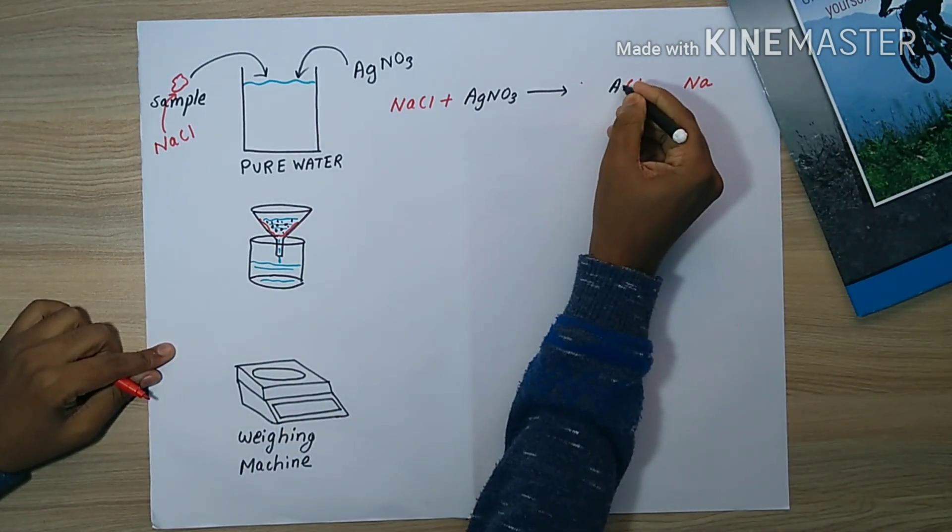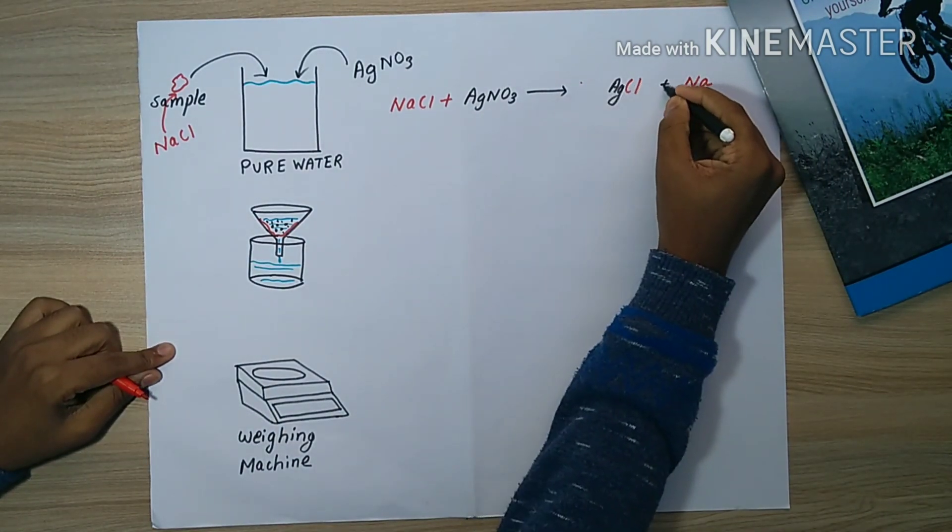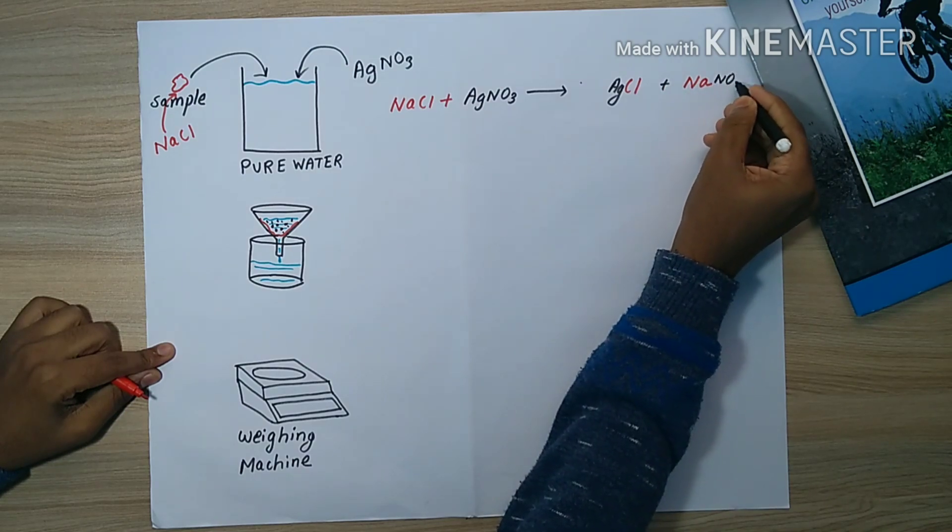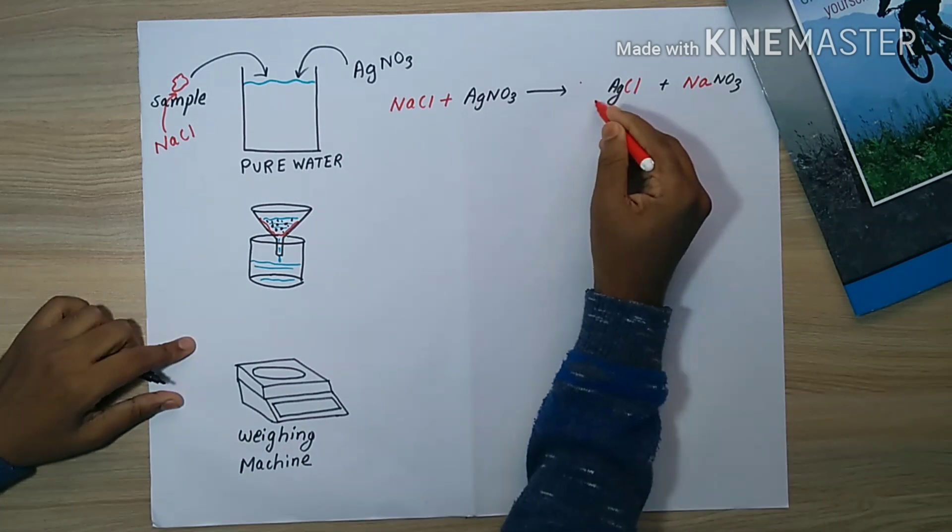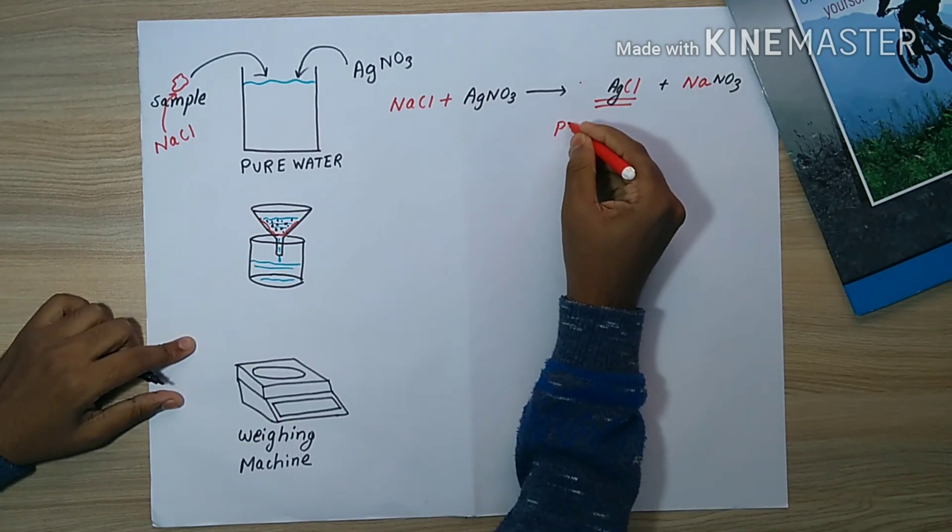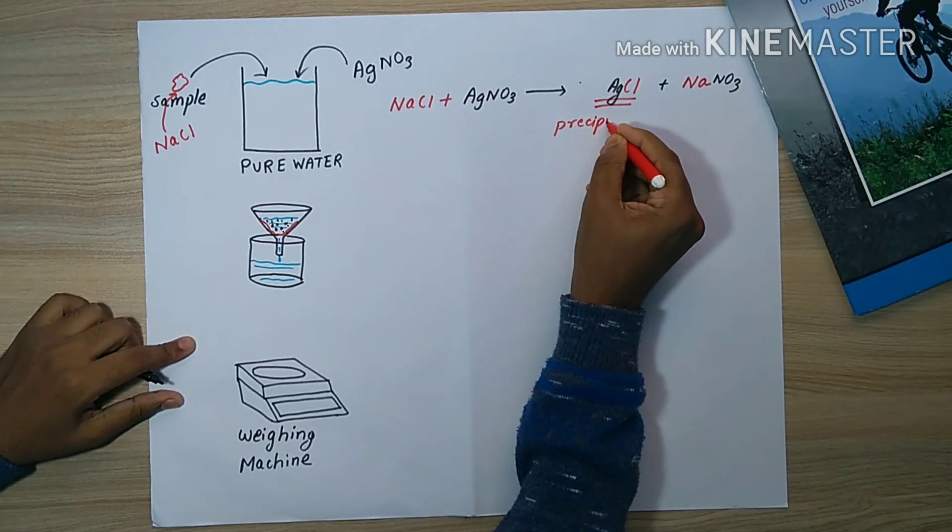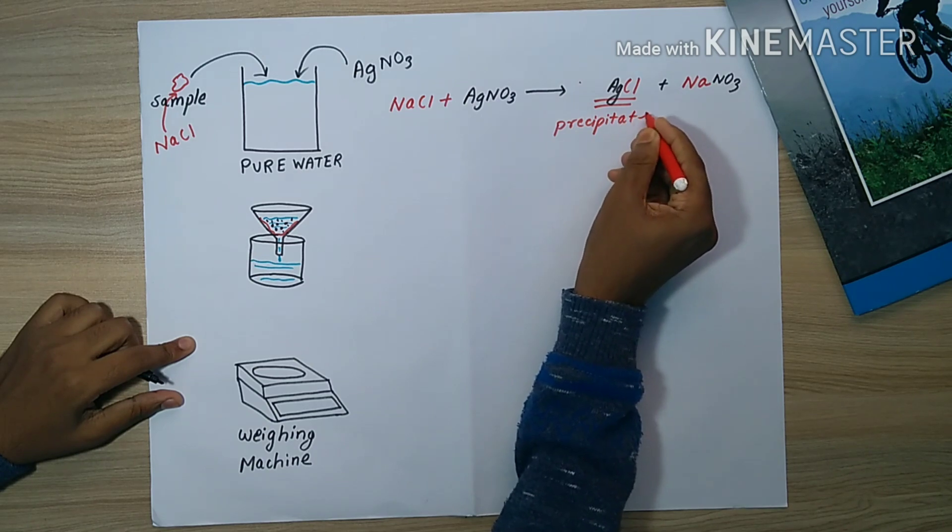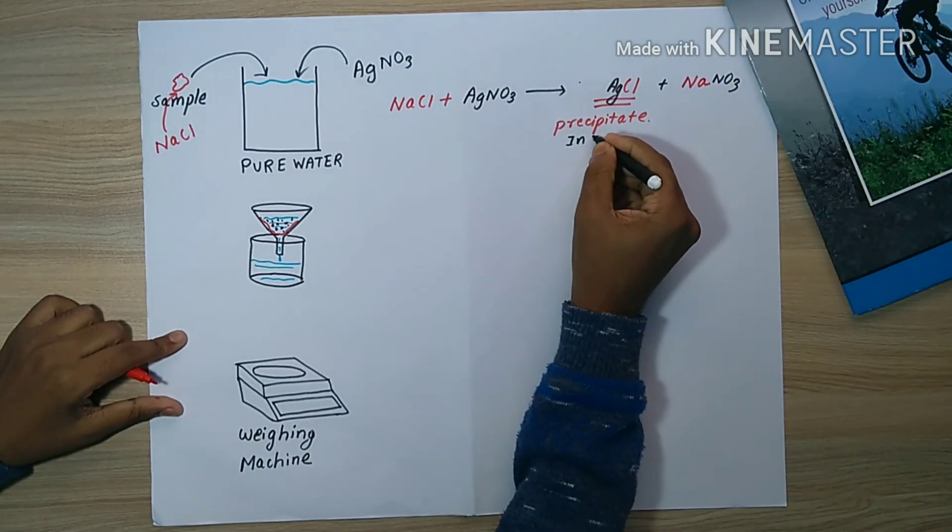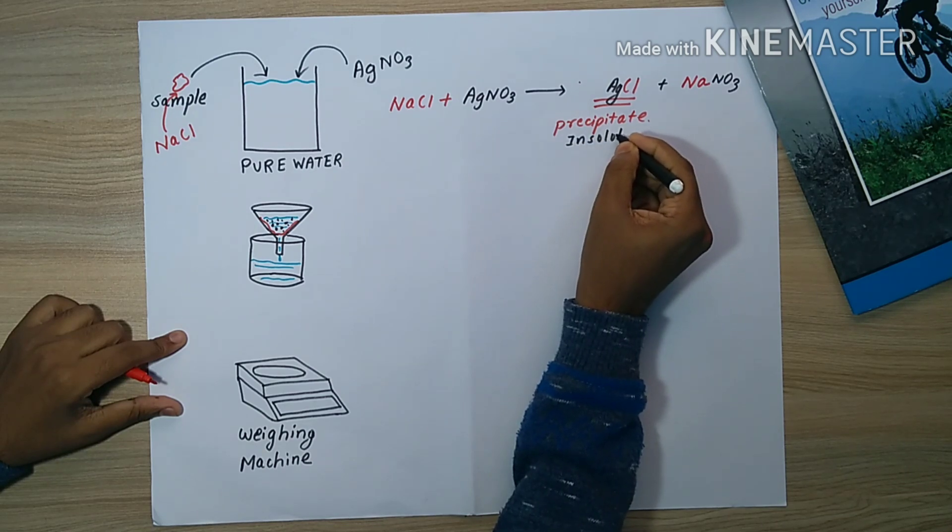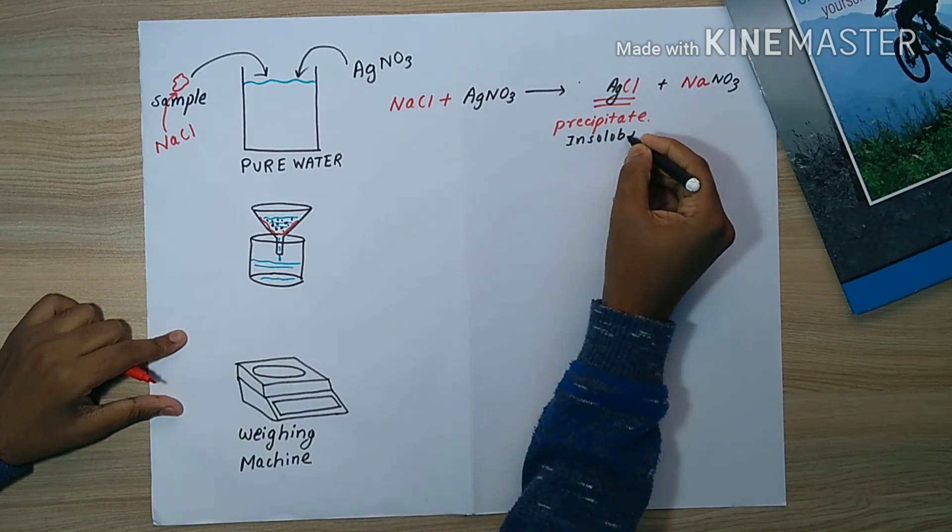It forms AgCl and NaNO3. This AgCl is stable and insoluble in pure water. Being insoluble, it forms precipitate at the bottom of the beaker.